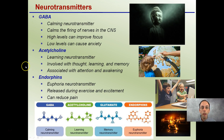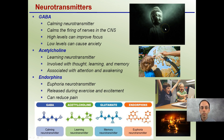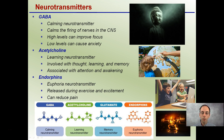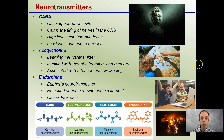Three other major ones are GABA, the calming neurotransmitter — it calms the firing of nerves in the central nervous system, helps improve focus, and low levels can cause anxiety. Acetylcholine is a learning neurotransmitter involved with thought, learning, and memory. And lastly, endorphins are the euphoria transmitter — they're released during exercise and points of excitement, and they can help reduce pain.